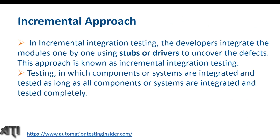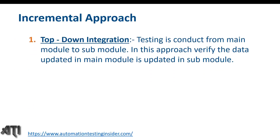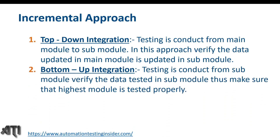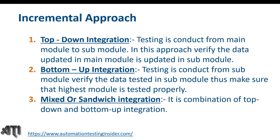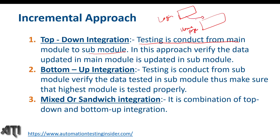The three types of incremental approach are: Top-Down integration, Bottom-Up integration, and Mixed. In Top-Down testing, testing is conducted from the main module down to the sub-module. We verify that data updated in the main module is also updated in the sub-module. Taking the login page and home page example — the login page is the main module and the home page is the sub-module. Until we log in with username and password, we won't land on the home page. Data flows from the main module to the sub-module — for example, the username gets displayed on the home page.